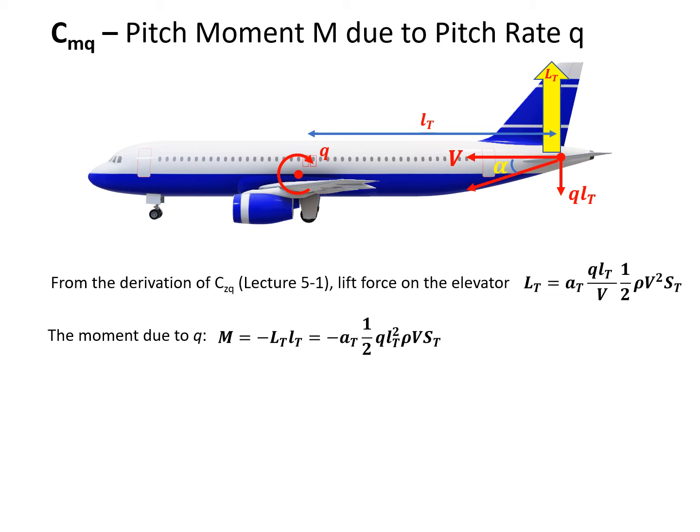We just use the LT expression times small lT and it's a complicated expression for M. Since we are doing the derivation, we need to calculate partial M partial q, and then q is eliminated from M. Since we're looking at the non-dimensional parameter CMq, we find a denominator. We have minus AT. AT is the lift coefficient slope for the elevator airfoil.